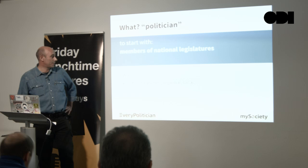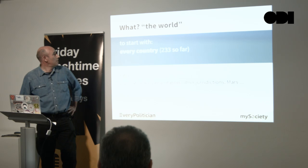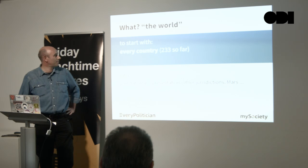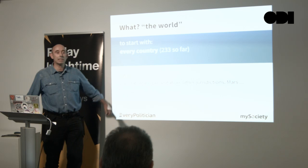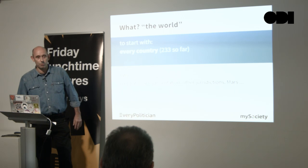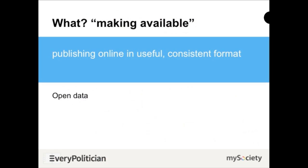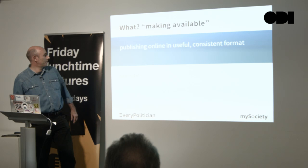What do we mean by the world? We started by saying every country, but if you've studied either maps or human society, you'll know that 'country' gets a little bit fractal towards the edges of definition. So far we've got 232 to 233, and later things like the European Parliament and other jurisdictions. We're publishing data in a useful, consistent format — the consistent format is what I'll keep coming back to during the talk.